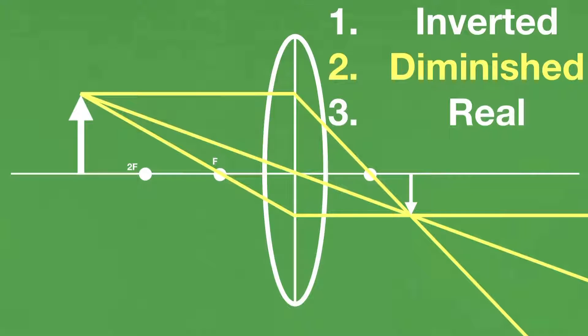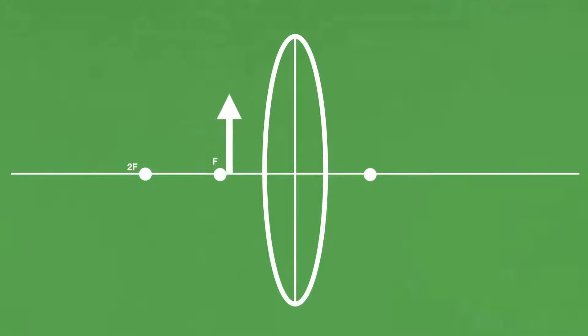However, and this is the hard part, if we were then to change the position of the arrow to in front of the focal point, that is to say closer to the lens than the focal point, and repeat our process with the rays again, you should notice something different. They don't converge at all.